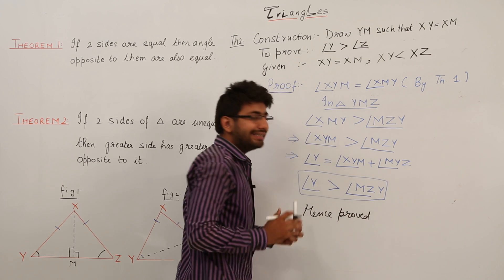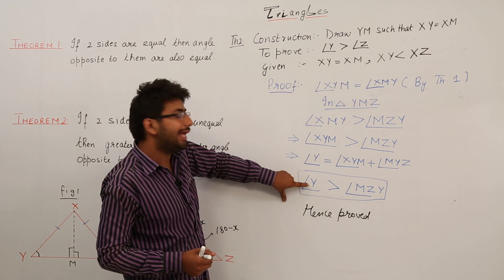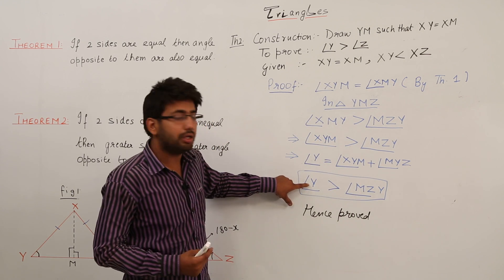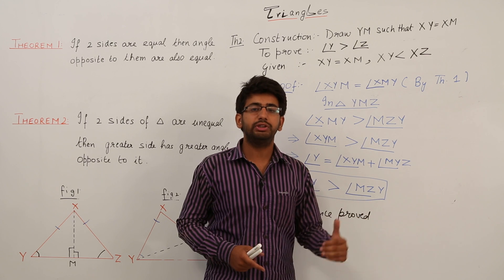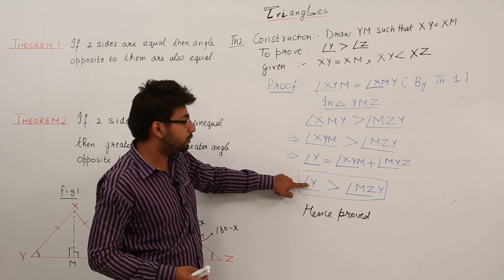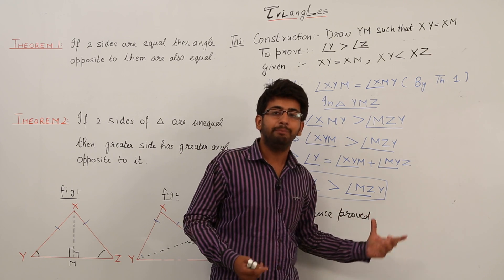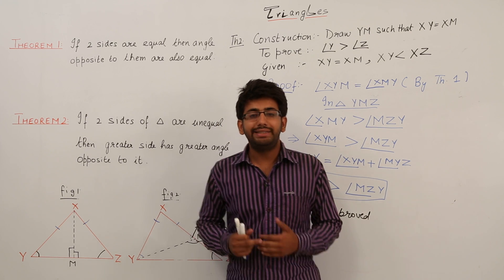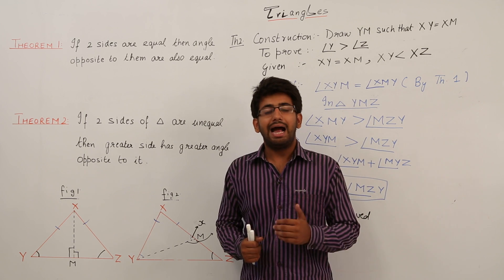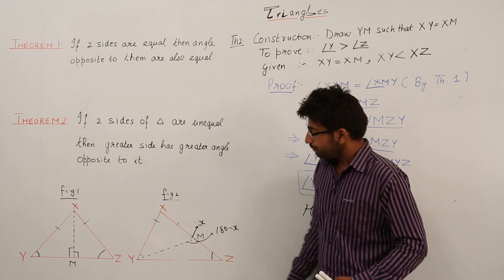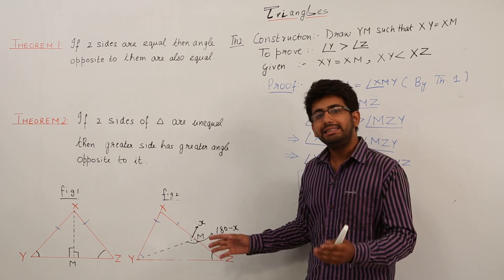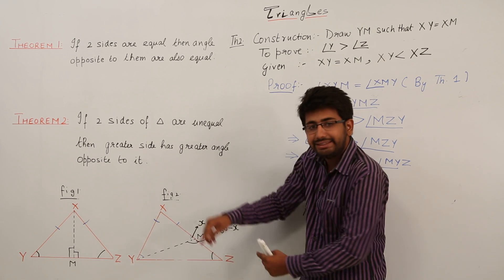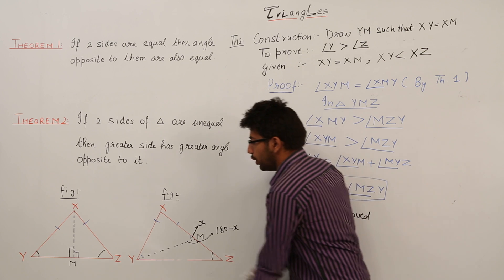Hence, we have proved that the angle opposite to the greater side is always greater than the angle opposite to the smaller side. In this case, angle Y was opposite to the greater side XZ, and angle Z was opposite to the smaller side XY, and we proved angle Y is greater than angle Z. Also, the converse of this theorem is true: if two angles are unequal, then the side opposite to the greater angle is greater than the side opposite to the smaller angle. So if angle Y is greater, then side XZ opposite to it is greater than side XY opposite to the smaller angle Z.